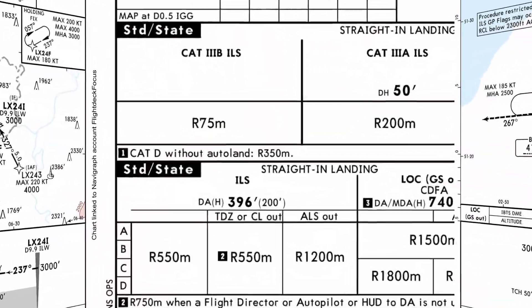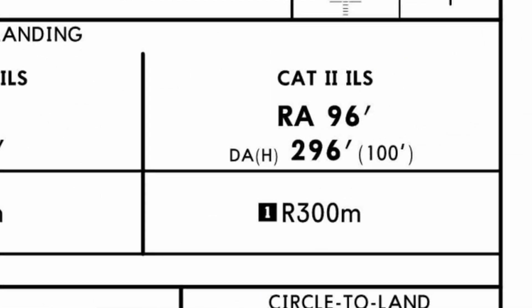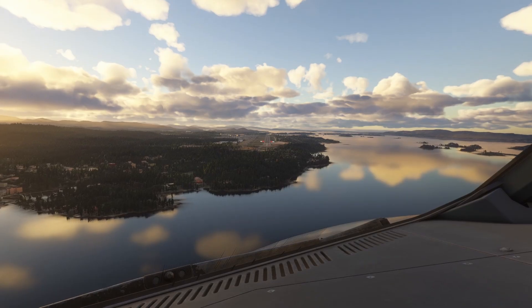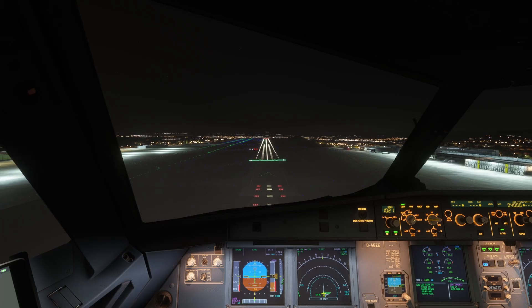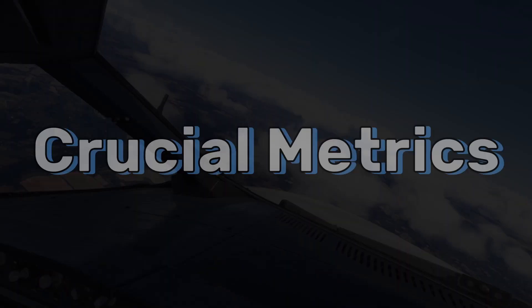In the next few minutes, you'll finally understand CAT 1, CAT 2 and CAT 3 — when they're used, what they mean, and even how to choose the correct category on your virtual flights.